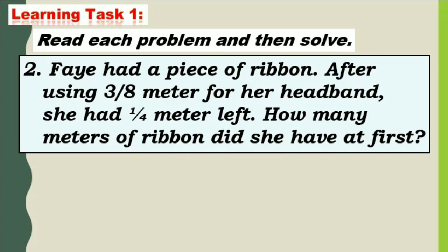Faye had a piece of ribbon. After using 3 eighths meter for her headband, she had 1 fourth meter left. How many meters of ribbon did she have at first?